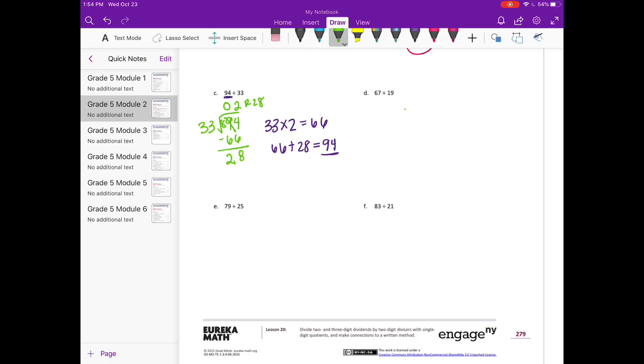D, 67 divided by 19. 19 can't go into 6, but 19 can go into 67. 19 is close to 20, so 20 could go into 67 3 times. So I'm going to try 3. 19 times 3 is 57. So minus 57, we get 3 remainder 10. And to make sure that's correct, we would do 3 times 19, which we know is 57, and 57 plus 10, our remainder, is 67.